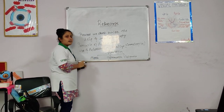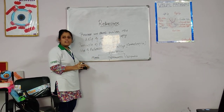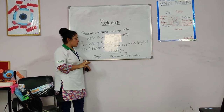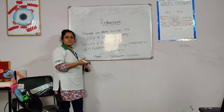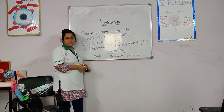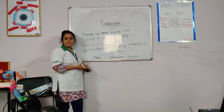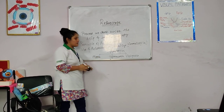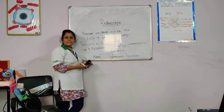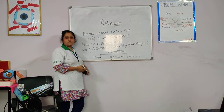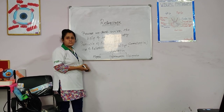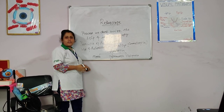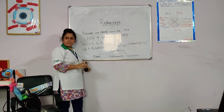In myopia, when the parallel rays of light come from infinity, the image forms in front of the retina when accommodation is at rest. In hypermetropia, when the parallel rays of light come from infinity, the image forms behind the retina when accommodation is at rest.